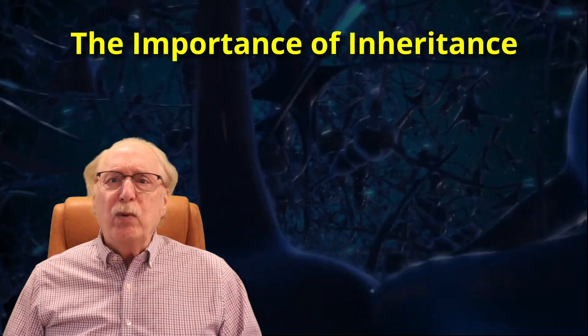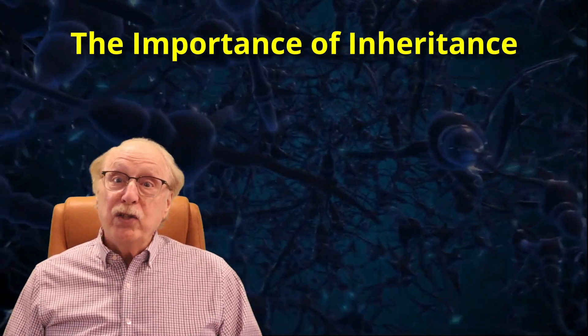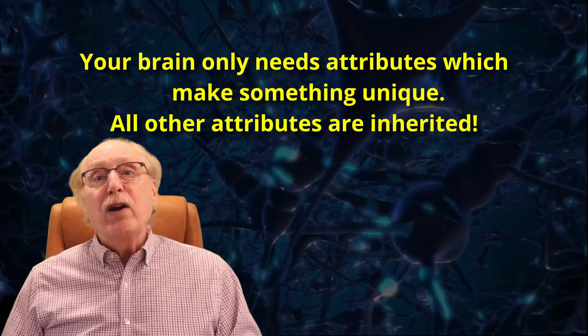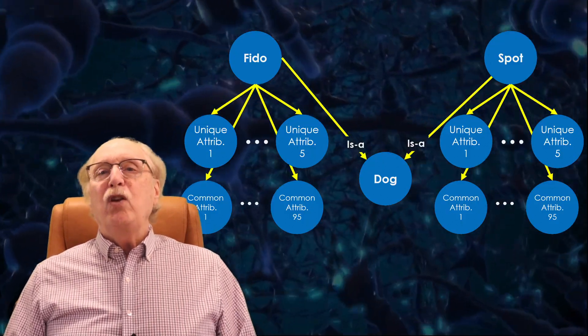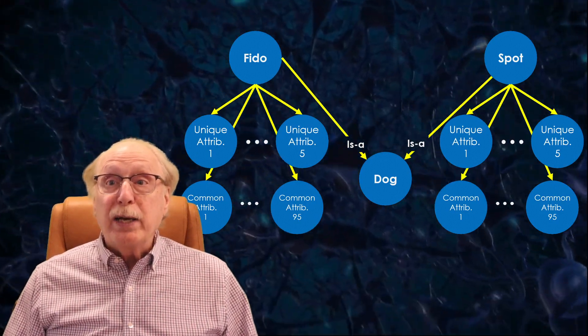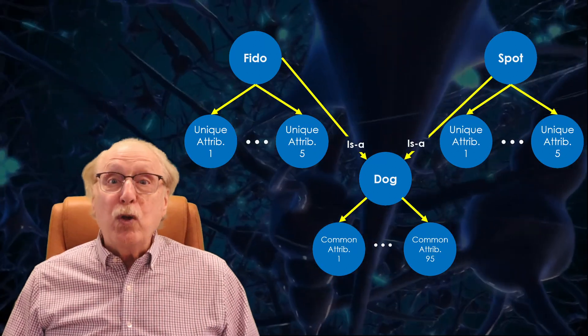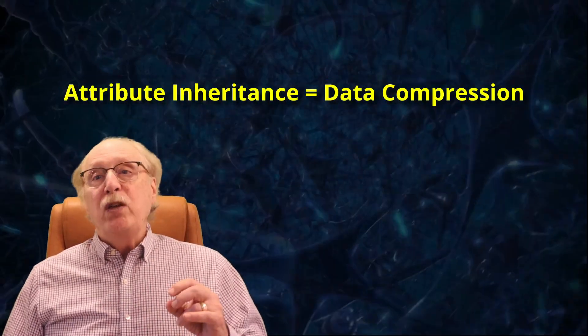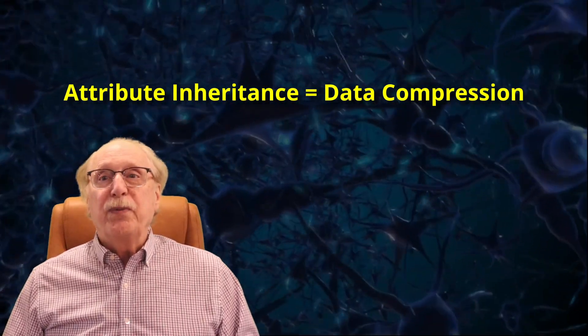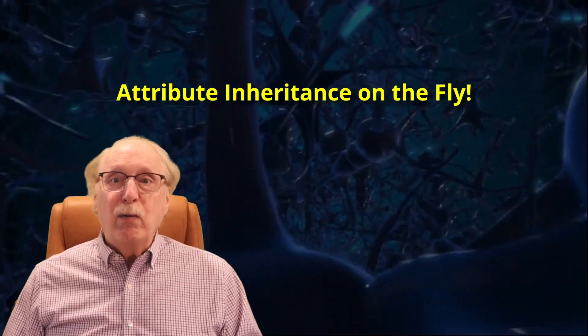Fido inherits attributes from dog, which inherits from animal and so on. Why is this so important? Because real world brains don't ever need to store all the attributes of anything. They inherit most attributes and only store the differences, the attributes which make something unique. You might know 100 attributes of Fido and 100 attributes of Spot. But if 95 of these attributes are common to all dogs, then you only need to represent five attributes each for Fido and Spot. All the others will be inherited. You can see that this data compression is huge. You don't need to know specifically that Fido has four legs and a tail as items of information. You know that Fido is a dog and dogs have four legs and a tail. And your brain can do the attribute inheritance on the fly whenever you think of Fido.